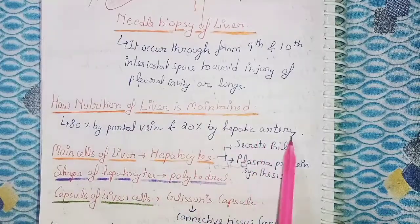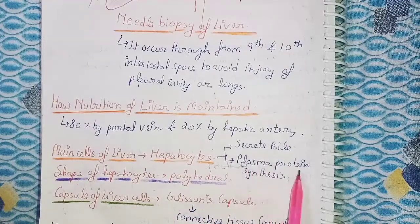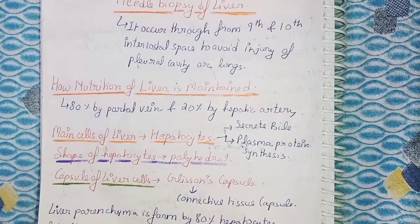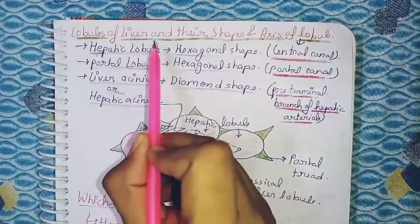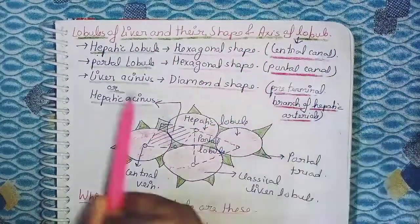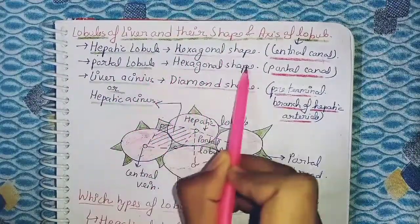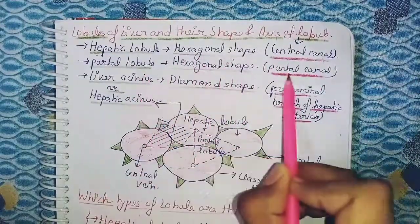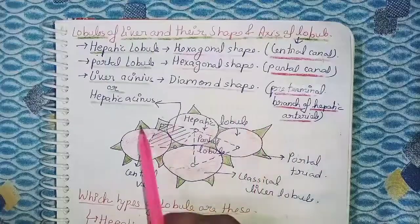Nutrition of the liver: 80 percent from the portal vein and 20 percent from the hepatic artery. The main cells of the liver are hepatocytes, which secrete bile and perform plasma protein synthesis. The shape of hepatocytes is polyhedral. The capsule of liver cells is called Glisson's capsule — essentially a connective tissue capsule. Liver parenchyma is formed by 80 percent hepatocytes and Kupffer cells present in the liver lobules. The hepatic lobule is hexagonal in shape, the portal lobule is also hexagonal, and the liver acinus (hepatic acinus) is diamond-shaped. The axis of the hepatic lobule is the central canal, of the portal lobule is the portal canal, and of the liver acinus is the pre-terminal branch of the hepatic artery.